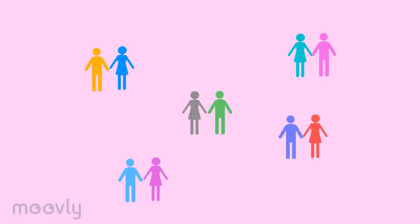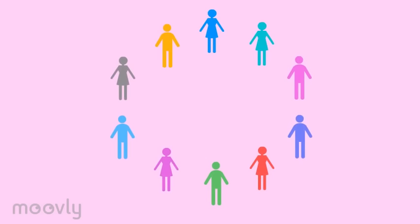After the couples have switched, two times new pairs will be formed and they will repeat the exercise in the same manner. The pairs may now choose if they prefer to draw abstract shapes or specific objects.